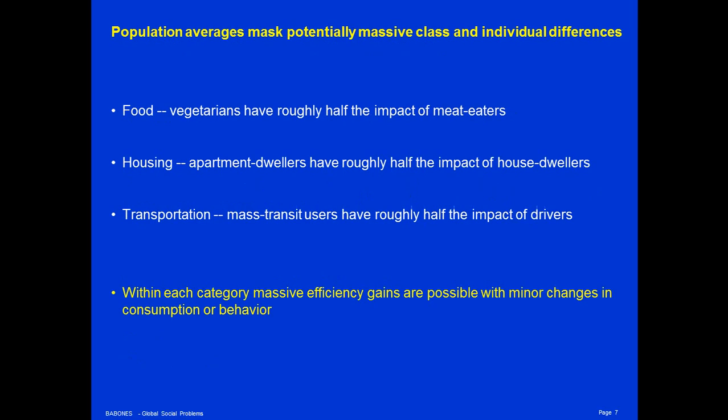Population averages, however, mask potentially massive class differences and individual differences. For food, vegetarians have roughly half the ecological footprint of meat eaters — raising meat is ecologically very destructive, eating vegetables much less so. Apartment dwellers have roughly half the ecological footprint of house dwellers, because it is much cheaper to heat and cool apartments in buildings where people live on top of each other than it is to heat and cool individual houses that are highly exposed to the environment around them.